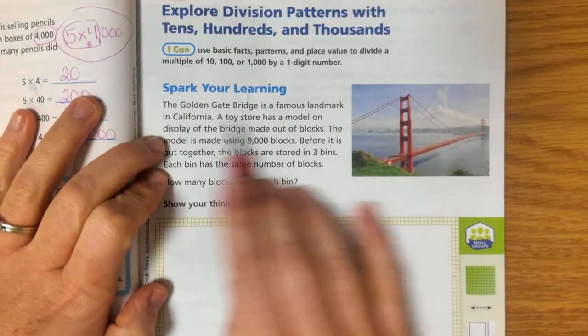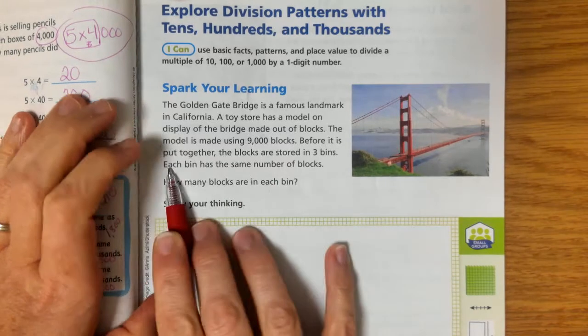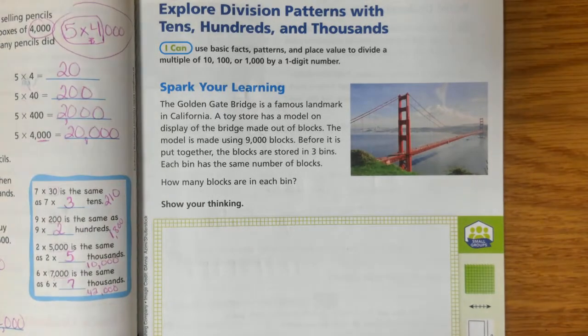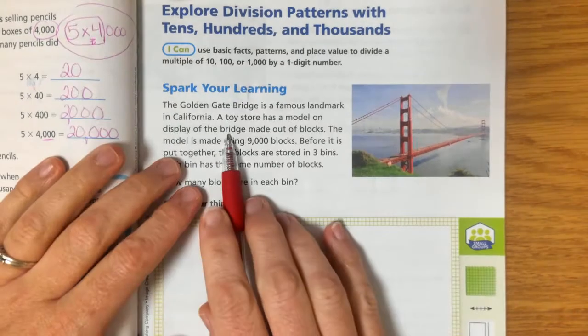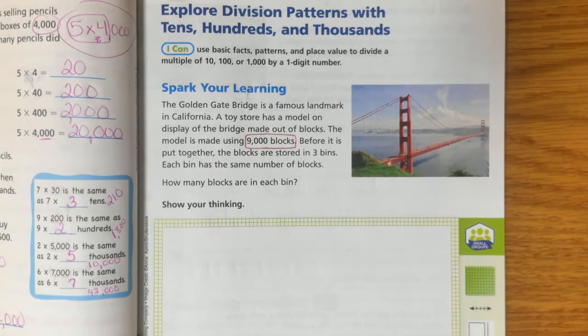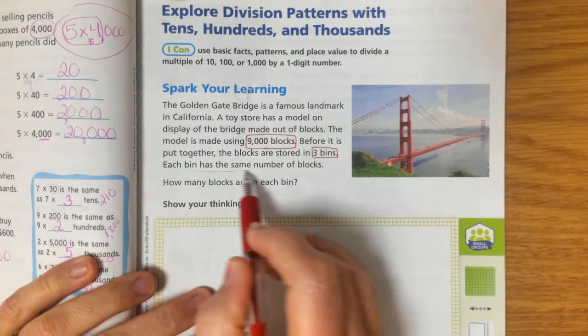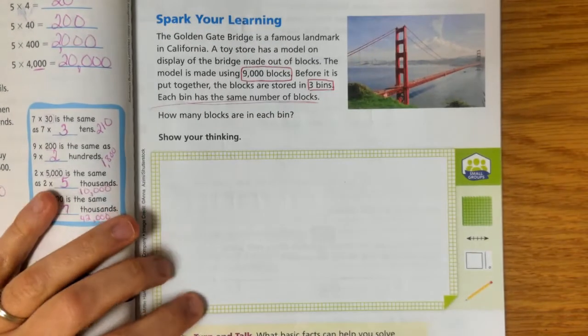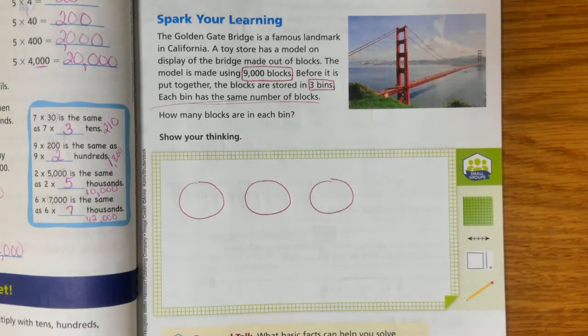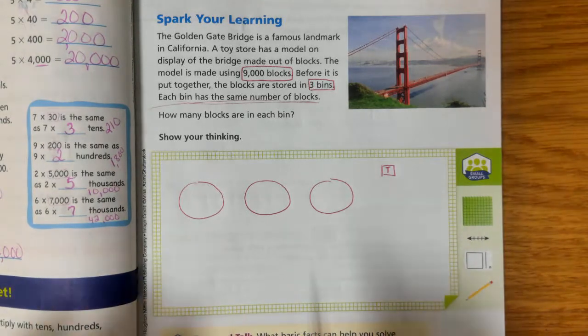So the Golden Gate Bridge is a famous landmark in California. A toy store has a model on display of the bridge made out of blocks. The model is made using 9,000 blocks. Before it is put together, the blocks are stored in three bins. Each bin has the same number of blocks. How many blocks are in each bin? So let's look at this problem again. So we can see that the toy store makes the model, and the model is made out of 9,000 total blocks. So the whole model has 9,000 blocks. But before it's put together, they have all the blocks put in bins, and they're using three bins to store their blocks. And each bin has the same number of blocks. So I'm going to represent this with three circles. These are my three bins. Now I'm not going to put 1,000 in each. But I'm going to show that each square that looks like this is going to be 1,000. So I've got 9 of them.